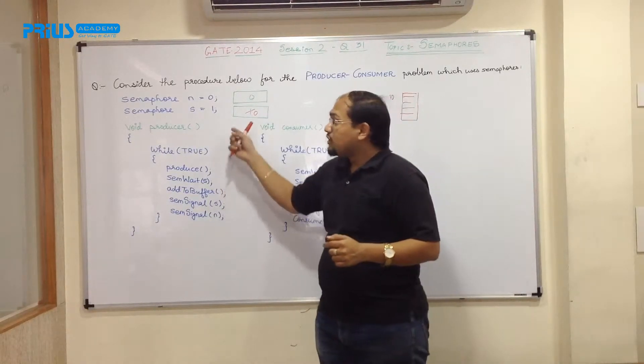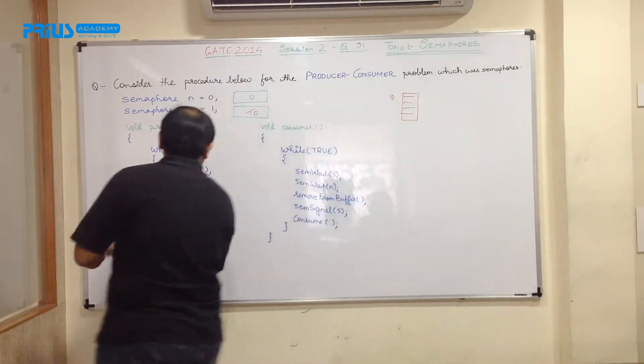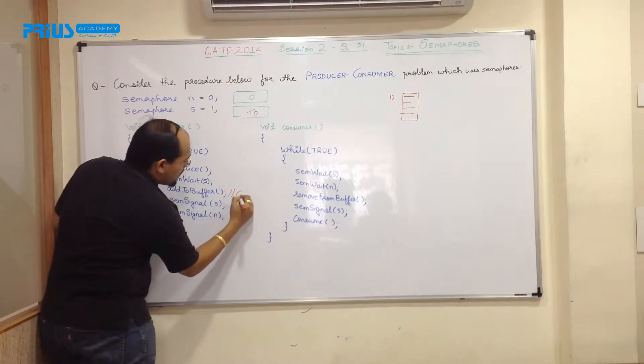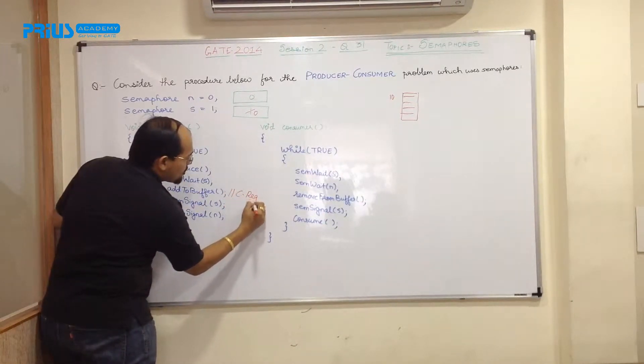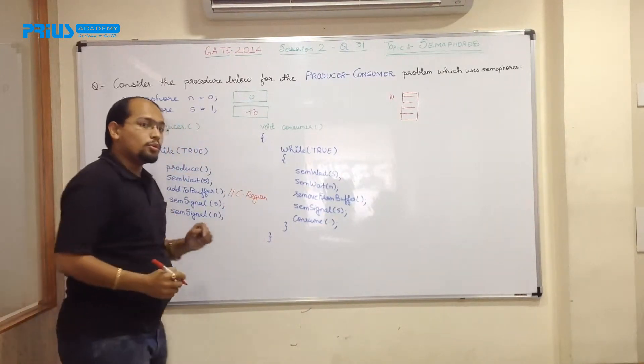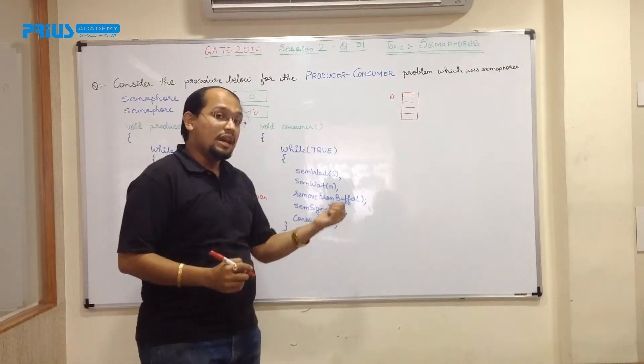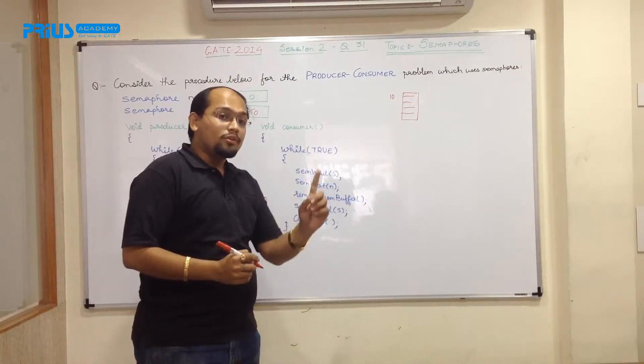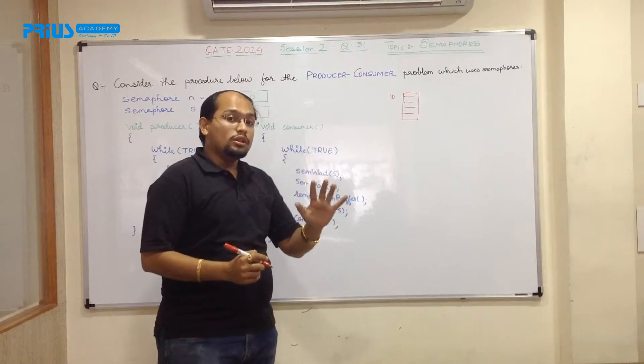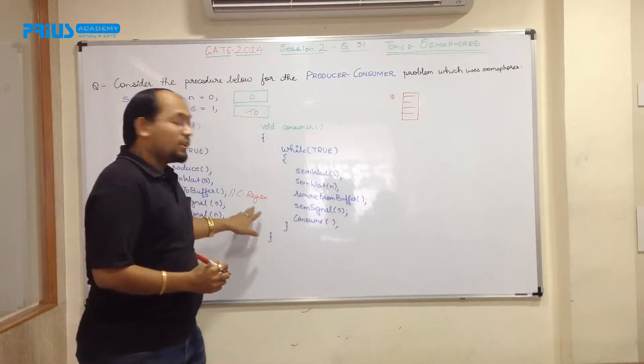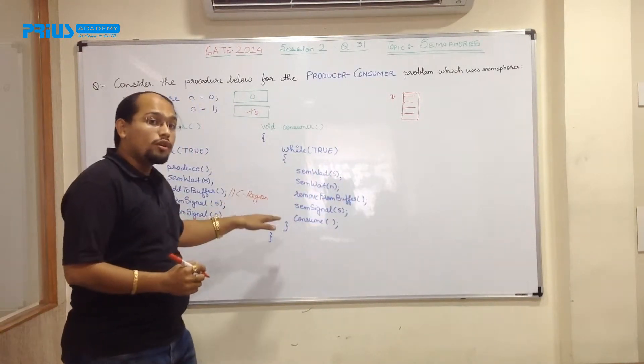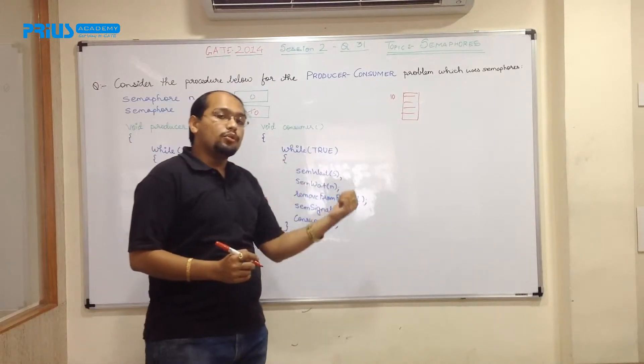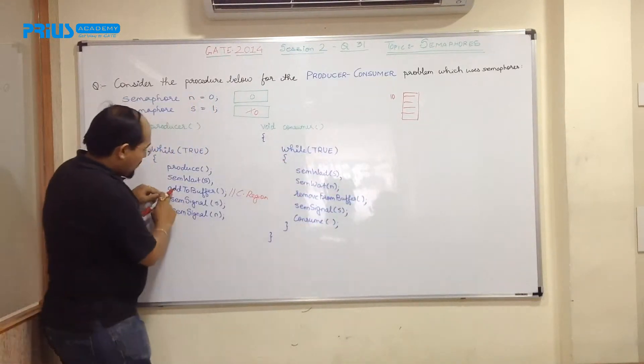Now this indicates that no other process can enter and this add to buffer is my critical region or a critical section. I hope you all know what a critical section is. It is a section where only one process is allowed to enter. No other process can enter unless someone is there inside. If that process comes out of the critical section, then and then second process can enter.